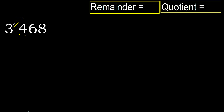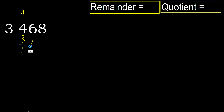3 multiplied by 2 is 6 — 6 is greater. Multiply by 1: 3 is not greater. Ok, subtract: 4 minus 3 is 1.